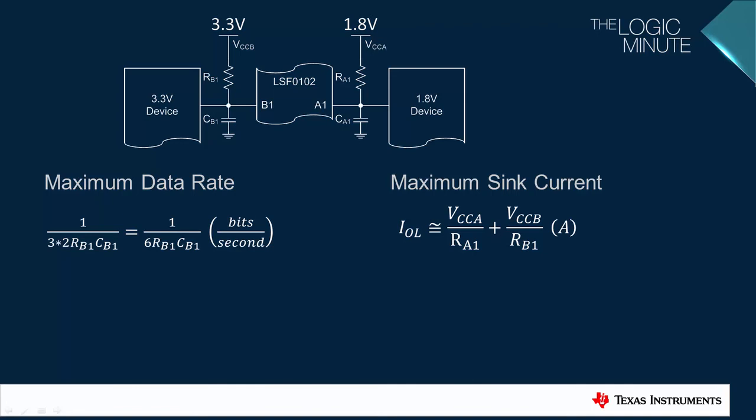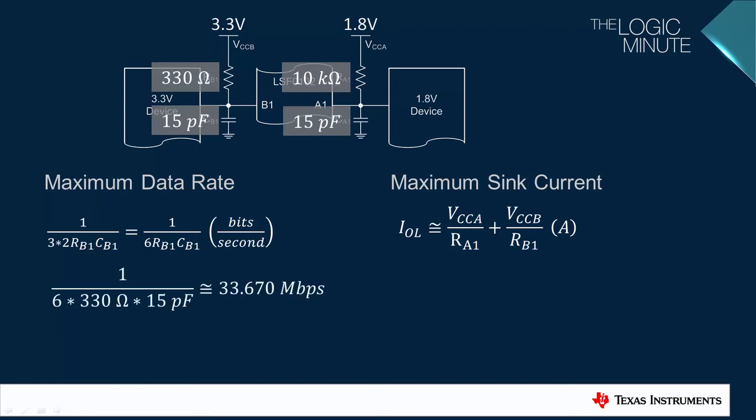To clarify, let's work a quick example. If the parasitic capacitance is estimated at 15 picofarads on each line and the pull-up resistor values are 330 ohms and 10 kilo ohms, then we can calculate the maximum data rate and sink current. The maximum data rate turns out to be 33.67 megabits per second, which we can also write as 16.835 megahertz.